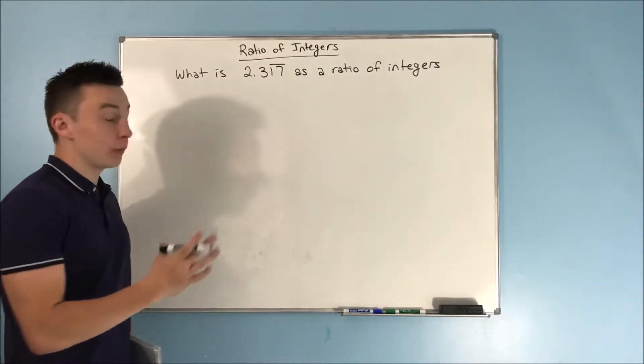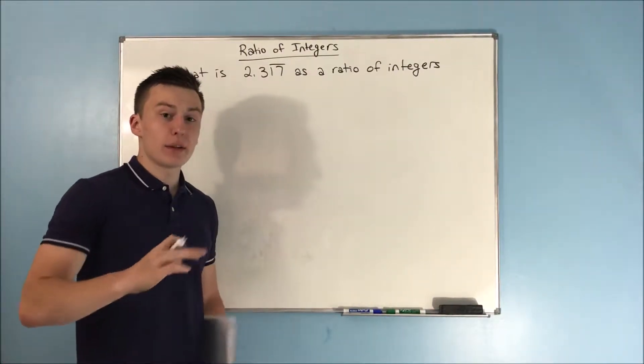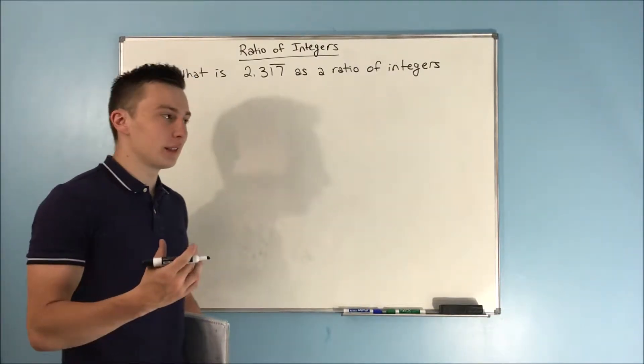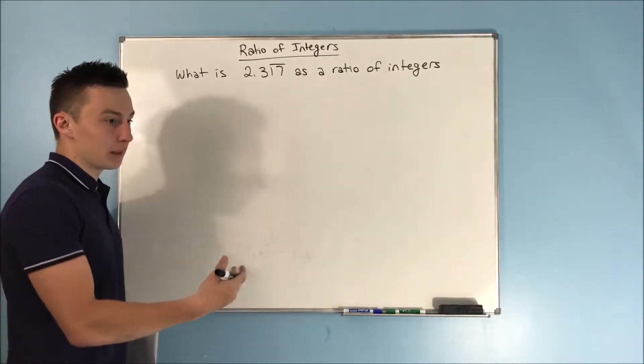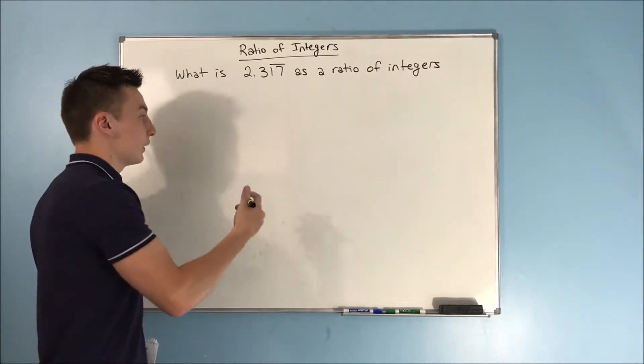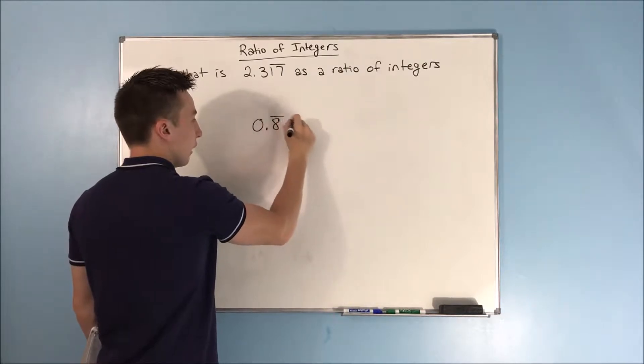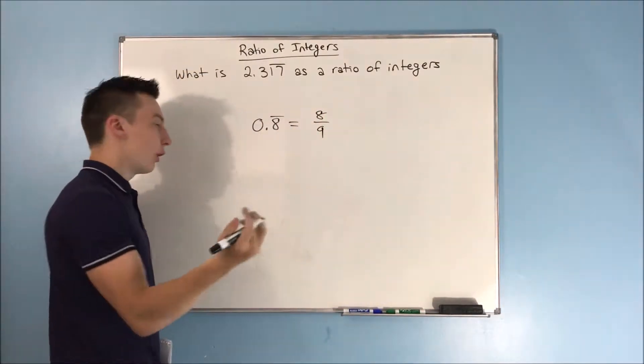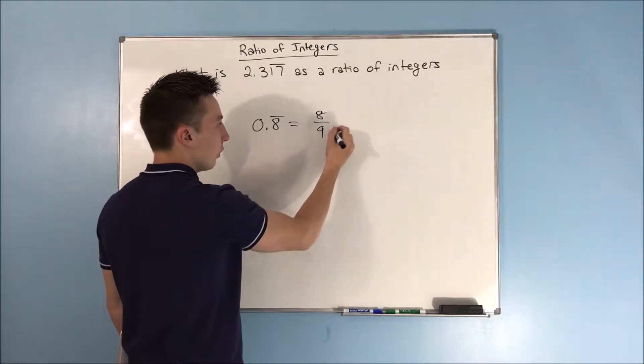In this video we're going to be talking about ratio of integers. I decided to include this at the end because it's something that's all on its own. It's not really about proving an infinite series is convergent or divergent. This is just focused on converting a repeating decimal into a fraction, also known as a ratio of integers.